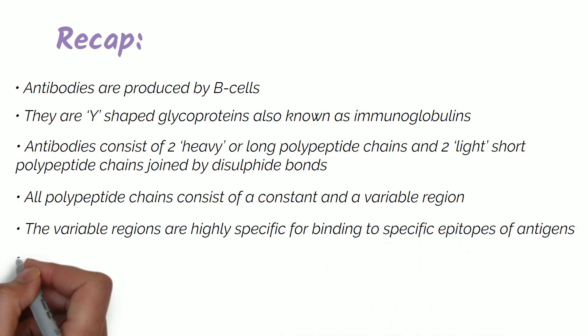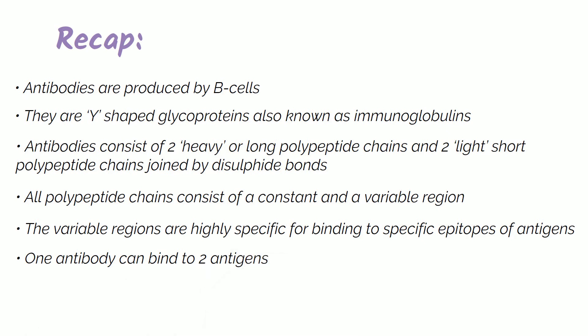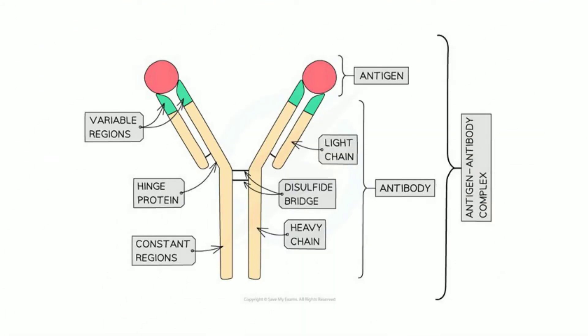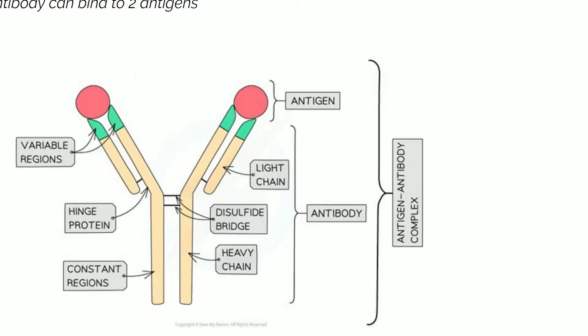The variable regions are highly specific for binding to specific epitopes of antigens. One antibody can bind to two antigens. Antibodies play an important role in the immune system and combating pathogen invasion. Knowledge of antibodies and their mode of action have been valuable to medicine. Monoclonal antibodies, which are produced after clonal expansion by B-cells after activation, have been applied to diagnostics and treatments.